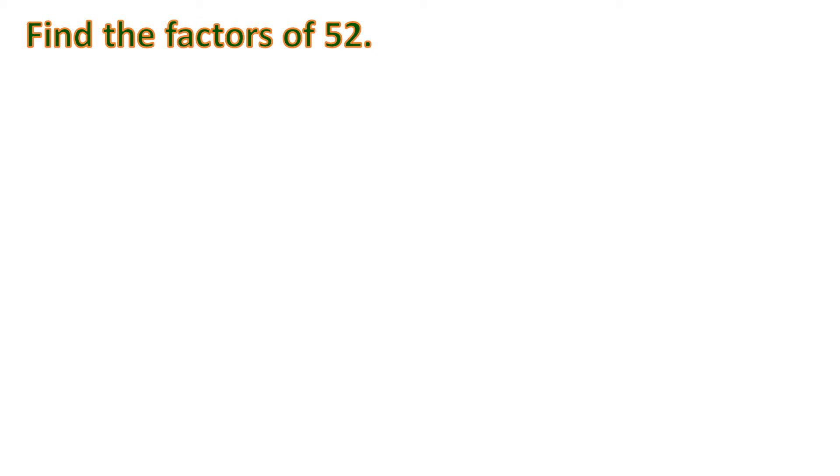So the easiest factors that we can get for a number is by multiplying 1 and the number, because any number multiplied by 1 is itself. So that means the factors are 1 and 52. So of course, the factors are not just 1 and 52. There are still other numbers. And that's why we put space for them, because we want to arrange the numbers in order.